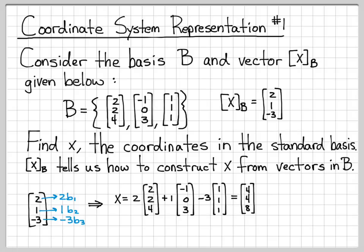So if I go ahead and do my algebra there, 2 times 2 is 4, times 2 is 4, times 2 is 8. 1 times the second vector just gives me the second vector. And then negative 3 times the third vector gives me a negative 3 everywhere. If I add all these coordinates up, 4 minus 1 minus 3 gives me 0. 4 plus 0 minus 3 gives me 1. And 8 plus 3 minus 3 gives me 8.